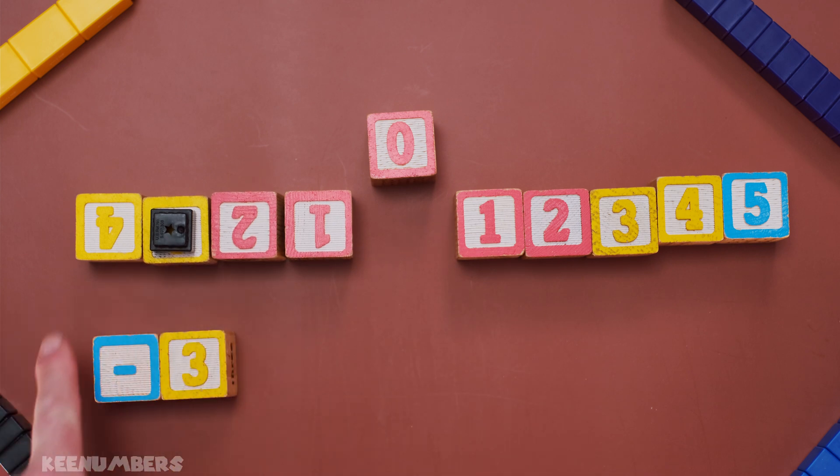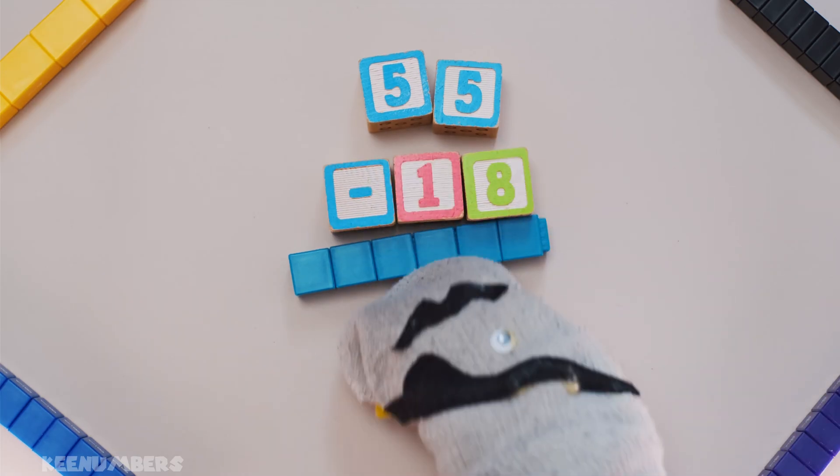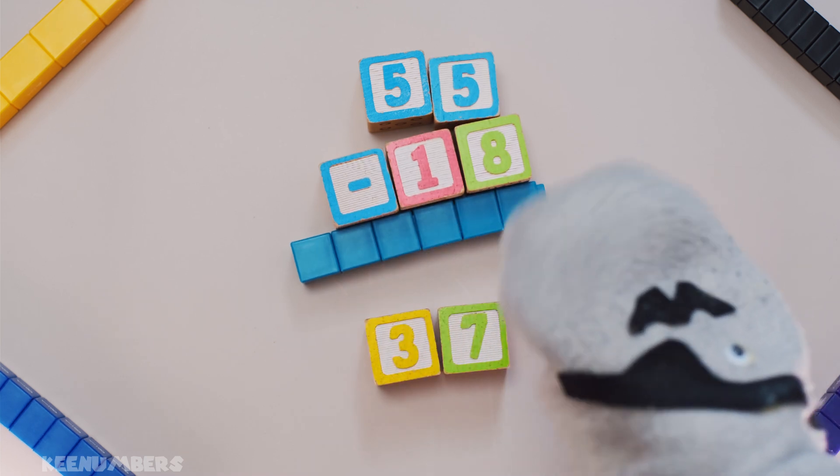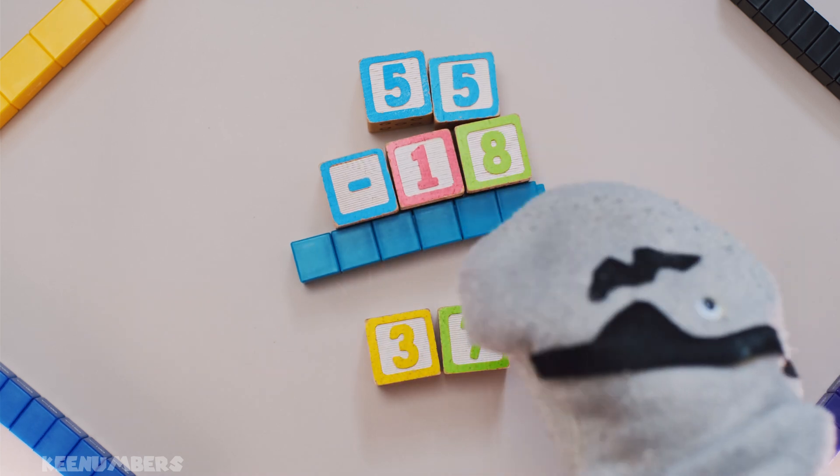Look at the number line. You start at 5 and you go backwards 8. That's how you get minus 3. So 40 minus 3.